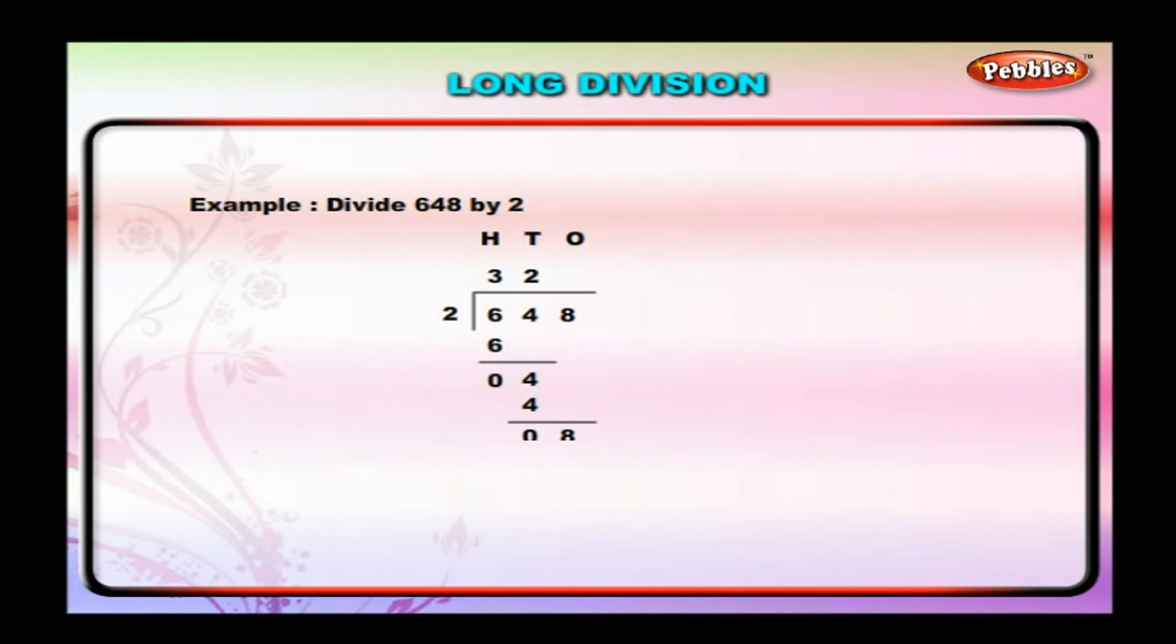Step 4: Bring down 8 ones. Divide 8 ones by 2. 8 ones divided by 2 is equal to 4 ones. Write 4 in the ones place in the quotient. Hence, 648 divided by 2 is equal to 324.